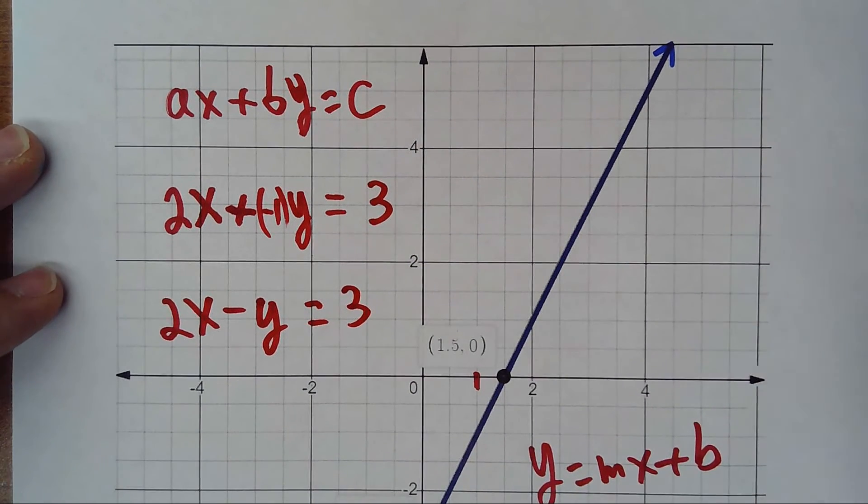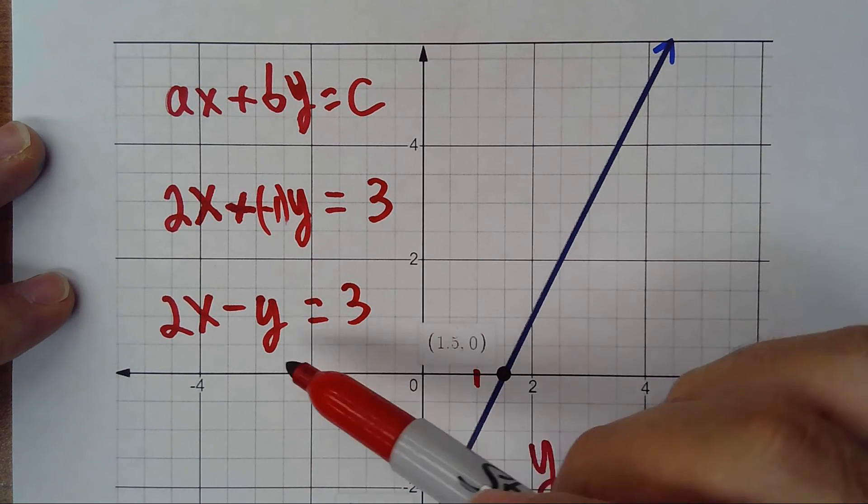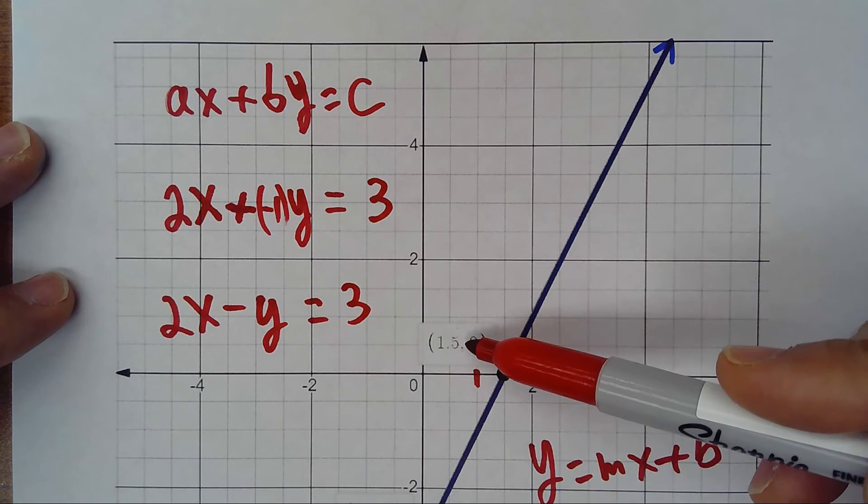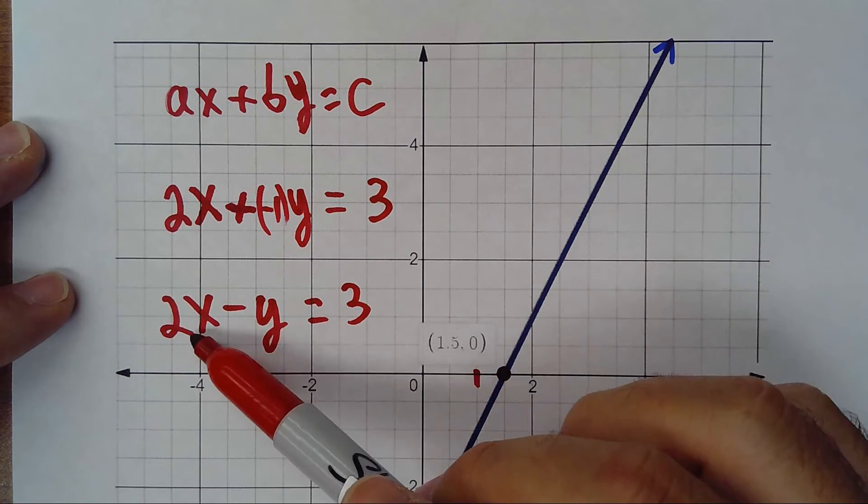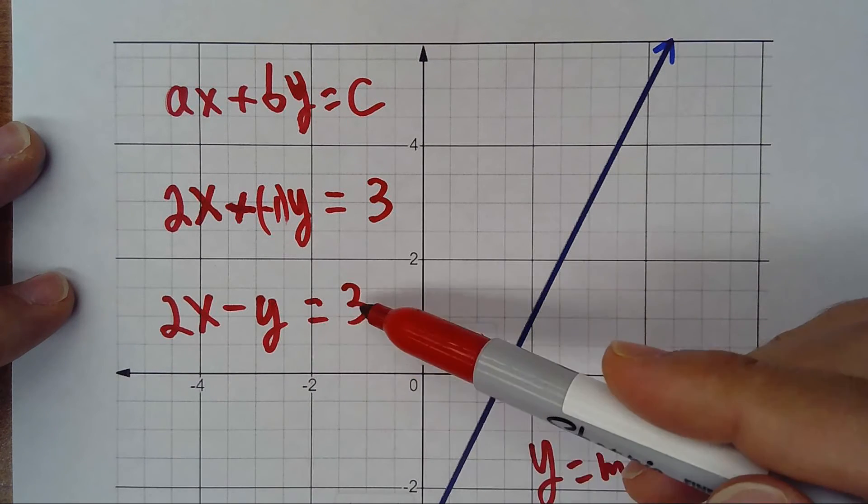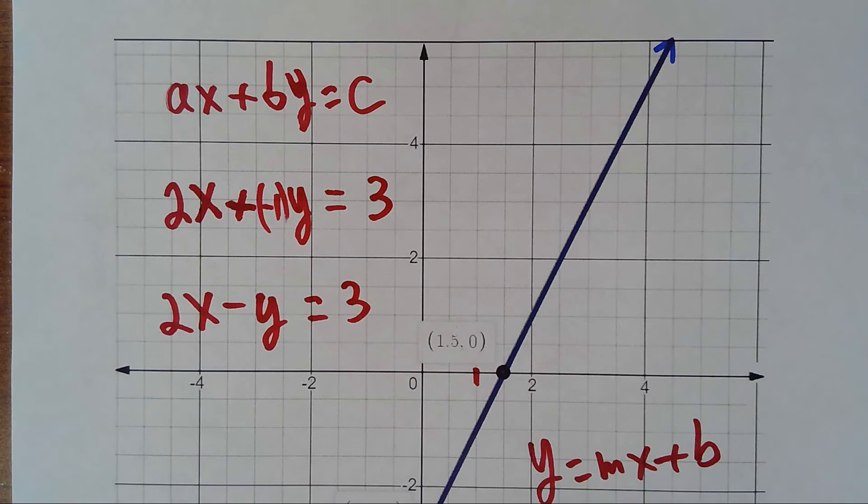That will be the equation in standard form, because when y is 0, x is 3 over 2 which is 1.5 positive. And when x is 0, negative y equals 3 will be y equals -3, which is what I have. So that's the other option in standard form.